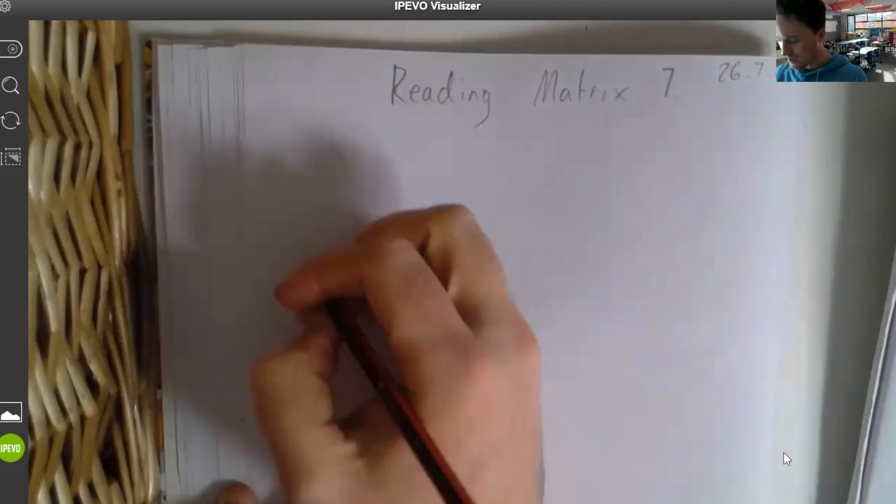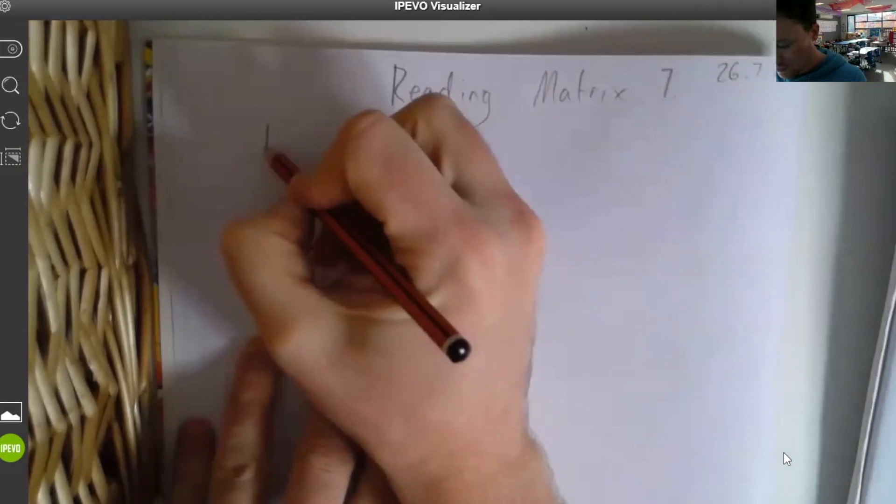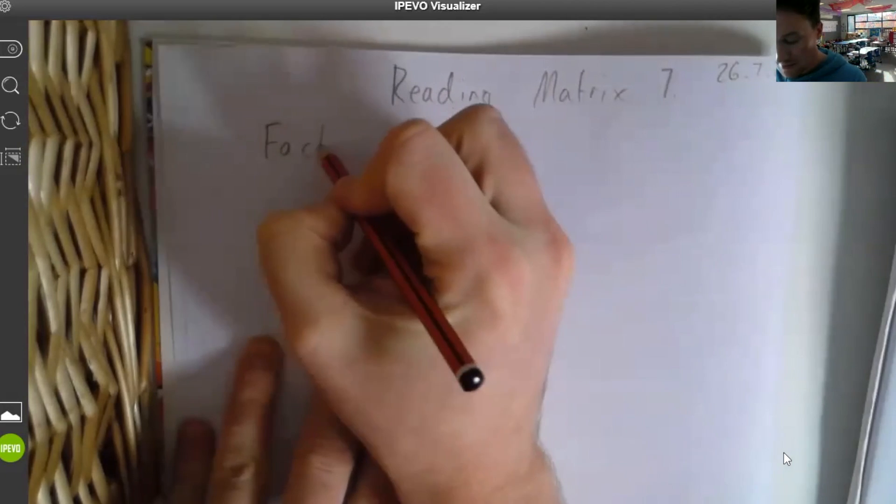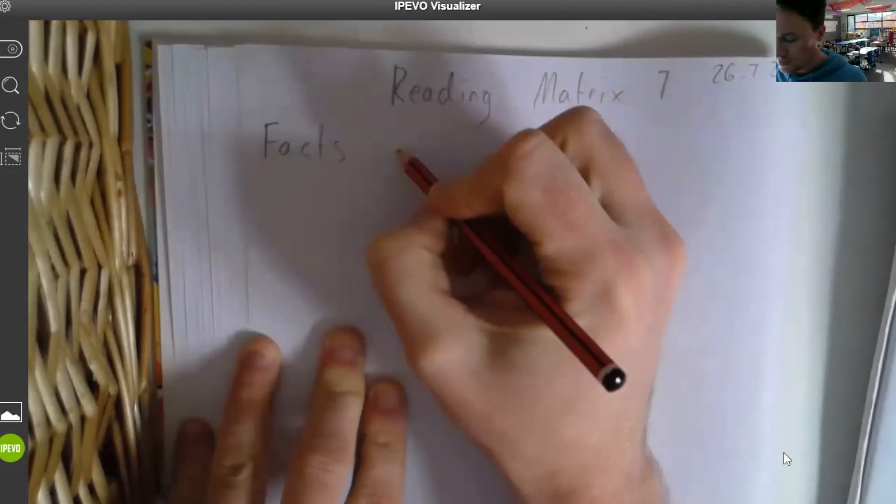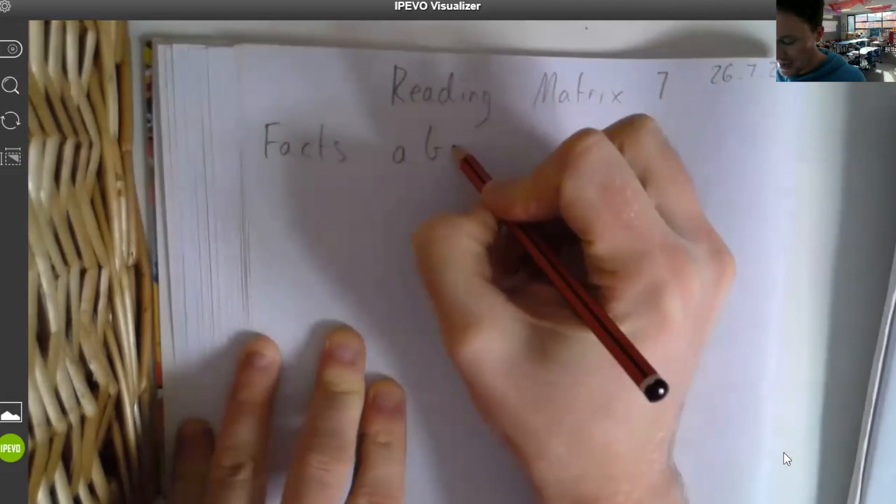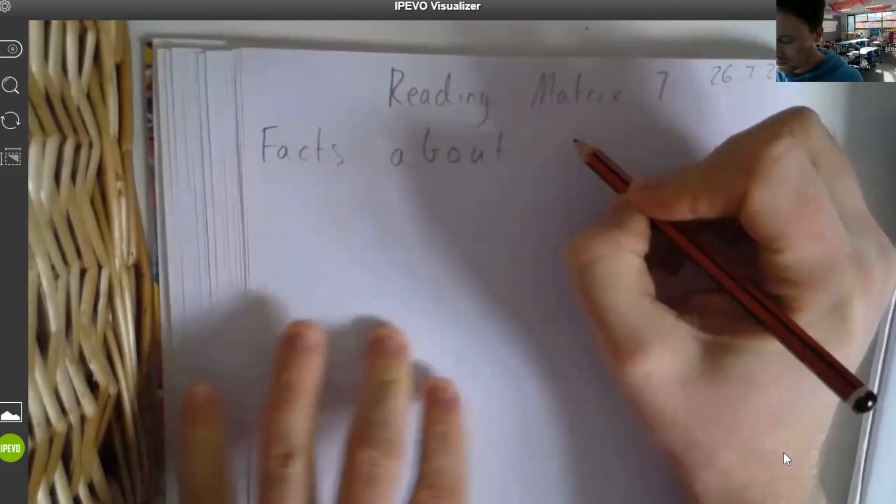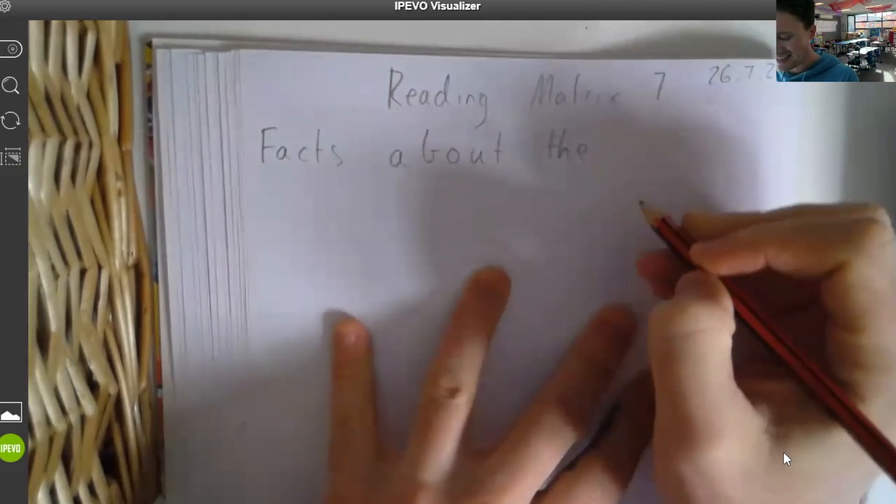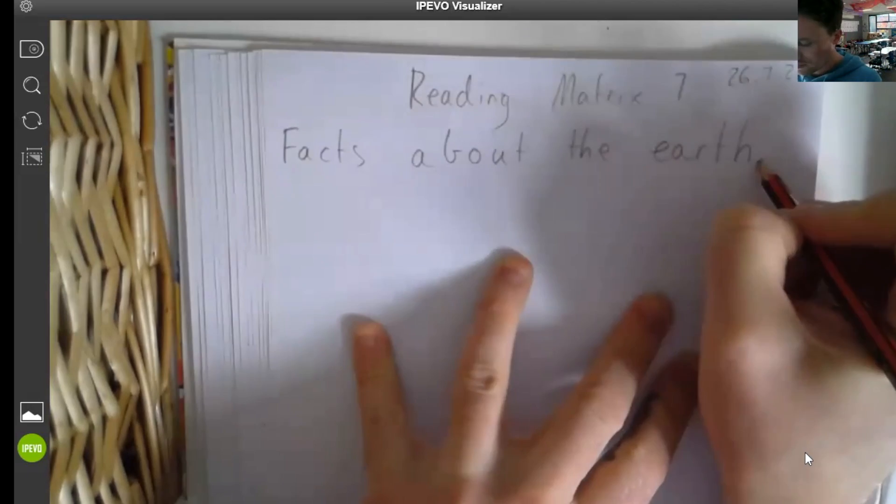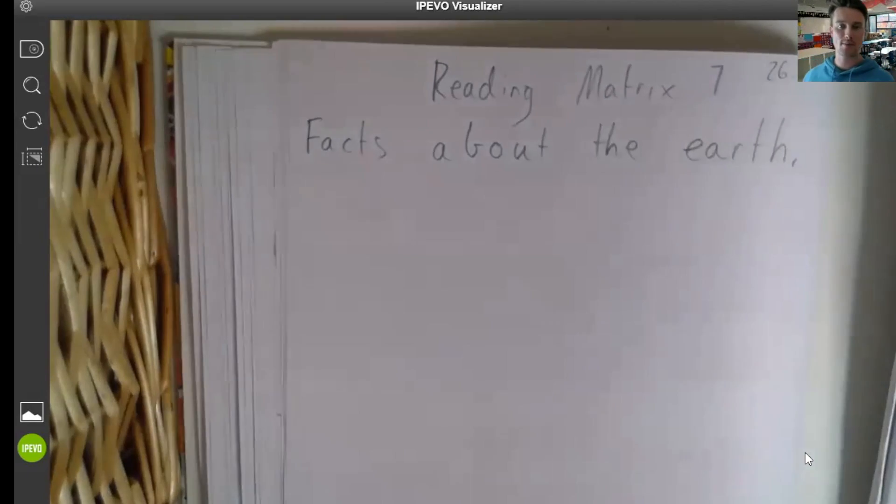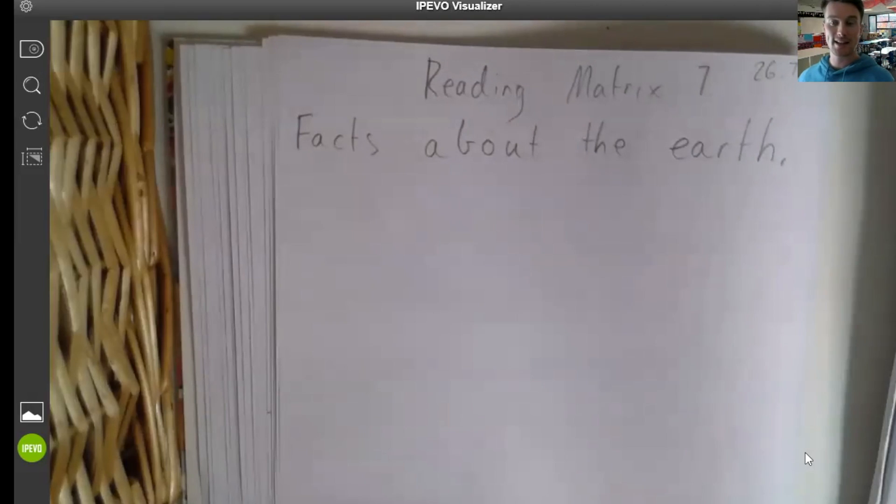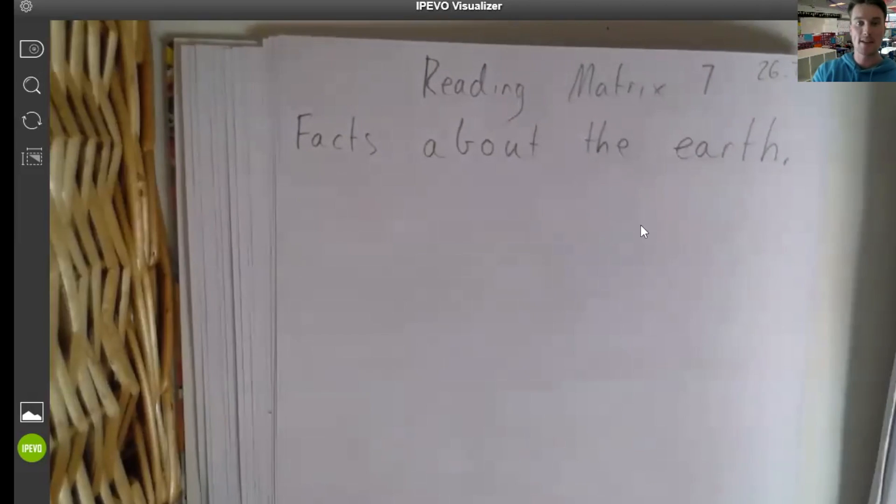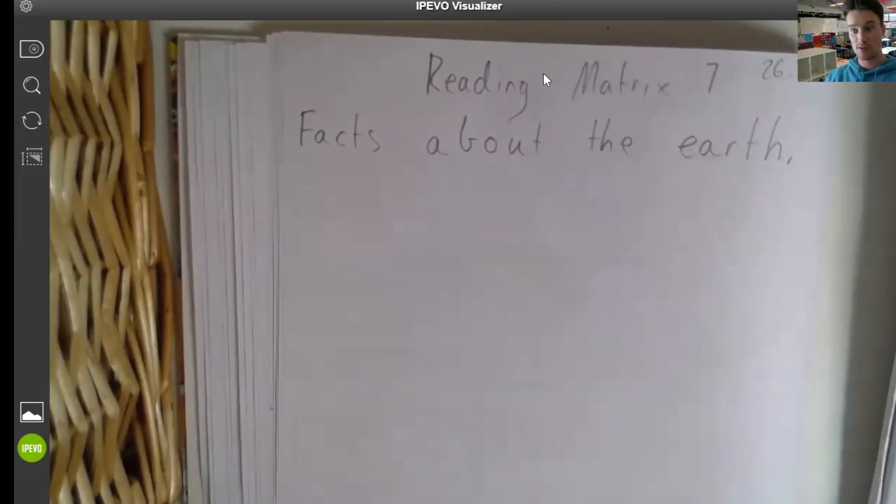So let's start off by writing down facts. Now that means something that is true. Facts about the, and let's do facts about the, let's start with the earth. So there, so you've got two different headings. So make sure you've done both headings and the dates, and then we'll keep going. Now if you're a little bit, so pause the video, do all that first.